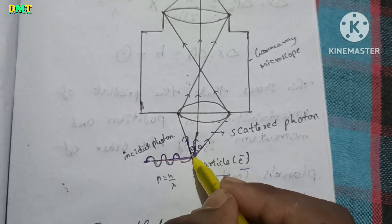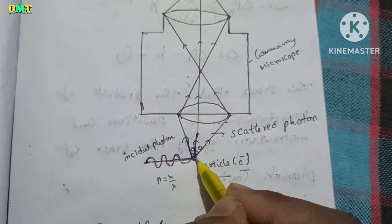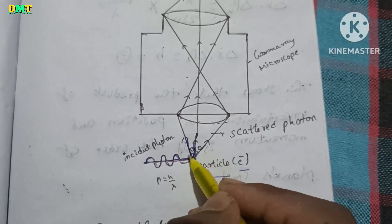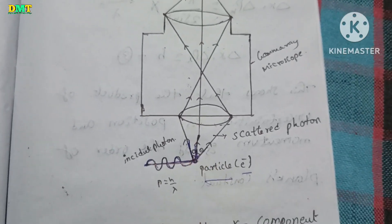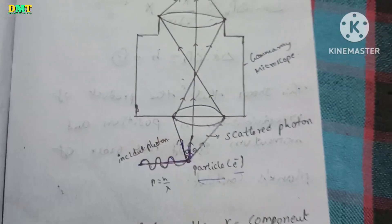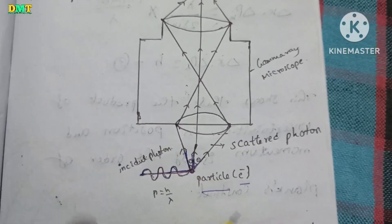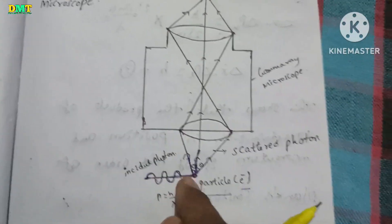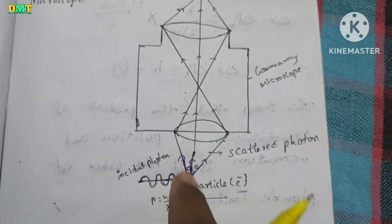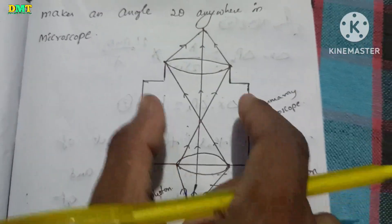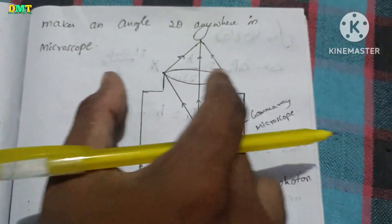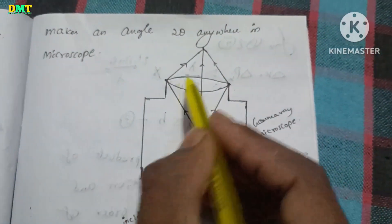So the first time we see theta — where is theta? This is the scattered photon. This is the gamma ray microscope.